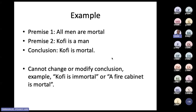The structure of premises one and two tells you that Kofi is going to be the subject and mortal is going to be the predicate. The subject and predicate in the conclusion are already decided by looking at premise one and premise two. That's why we say deductive argument is an argument where the relationship between the premises and the conclusion is logical, and as a result, it permits only one conclusion — Kofi is mortal.